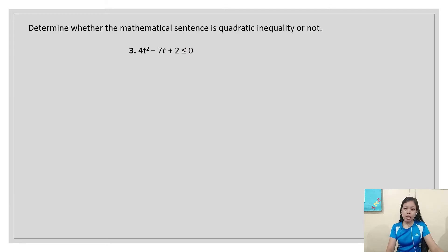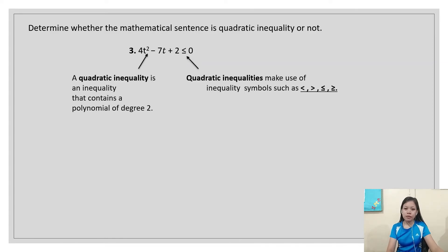Determine whether the mathematical sentence is a quadratic inequality or not. We have 4t² - 7t + 2 ≤ 0. A quadratic inequality is an inequality that contains a polynomial of degree 2. We have here the highest degree of 2, and since it uses the less than or equal symbol, this equation is a quadratic inequality.